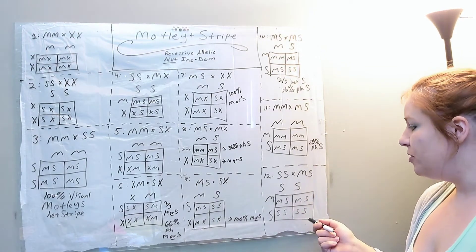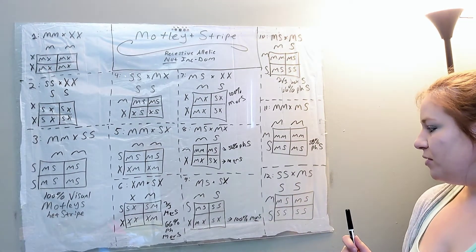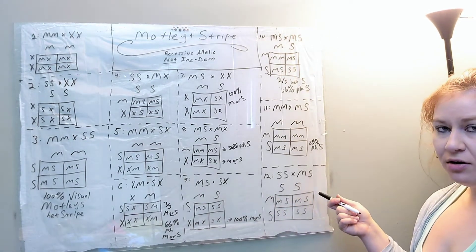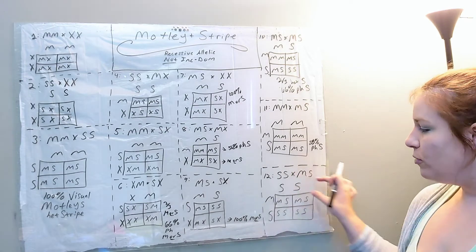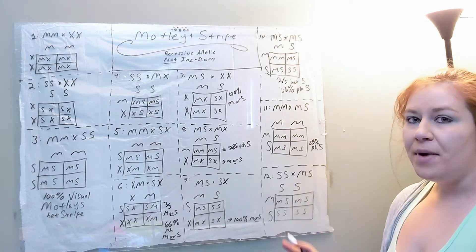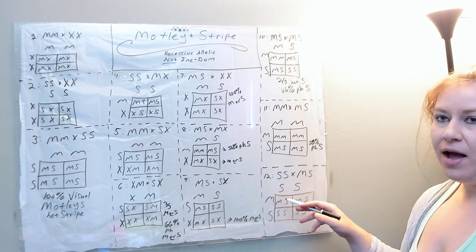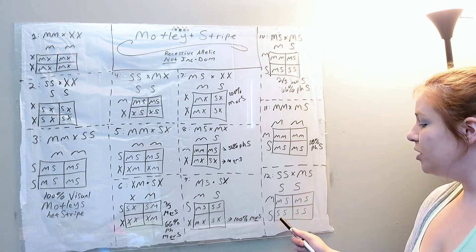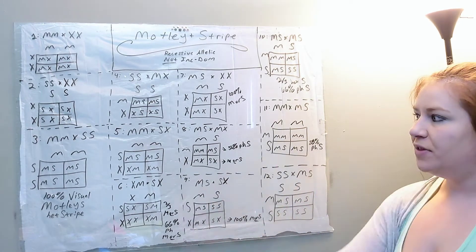The last pairing is a visual Stripe to a Motley Stripe — a little more straightforward. All visual Motleys from this clutch are 100% Het for Stripe. And you'll also get Stripes. Because you have a homozygous Stripe, all babies must be Het for that gene. So you get half Stripes and half Motleys Het for Stripe.